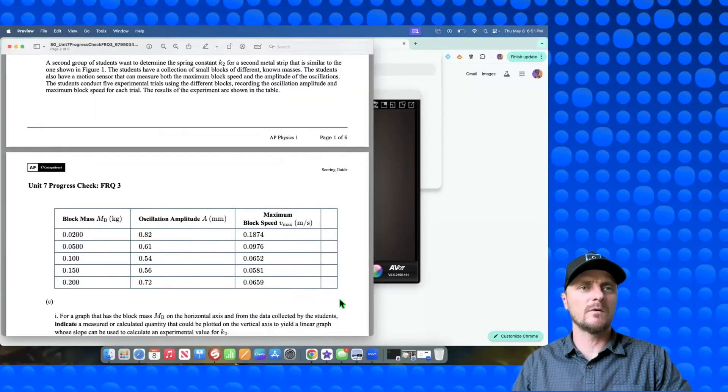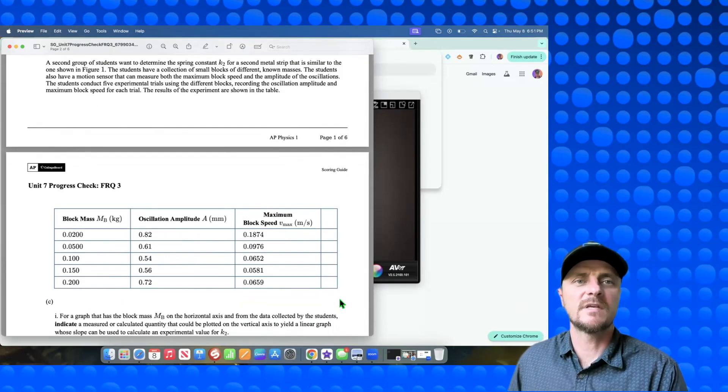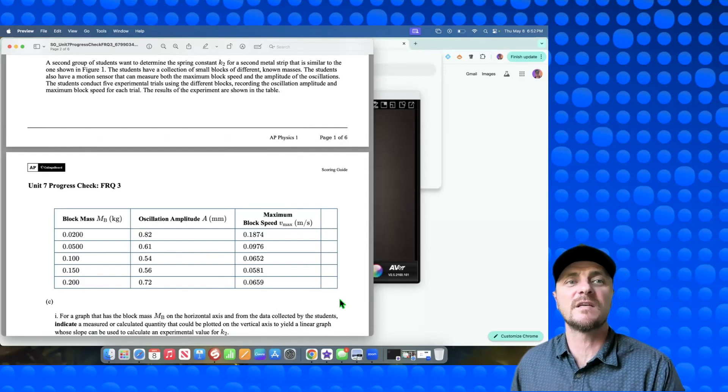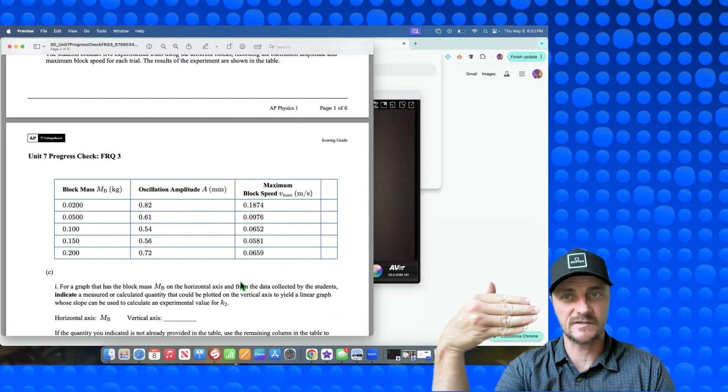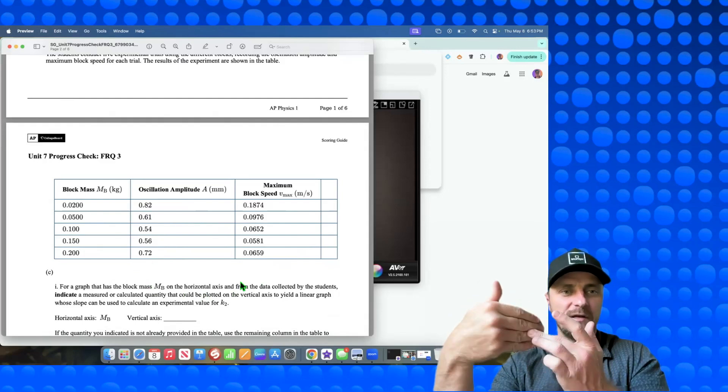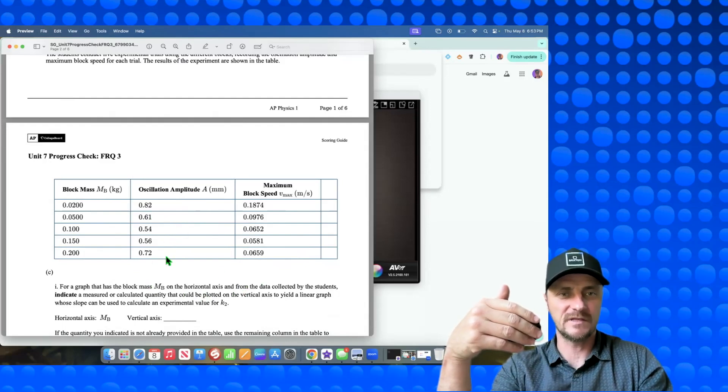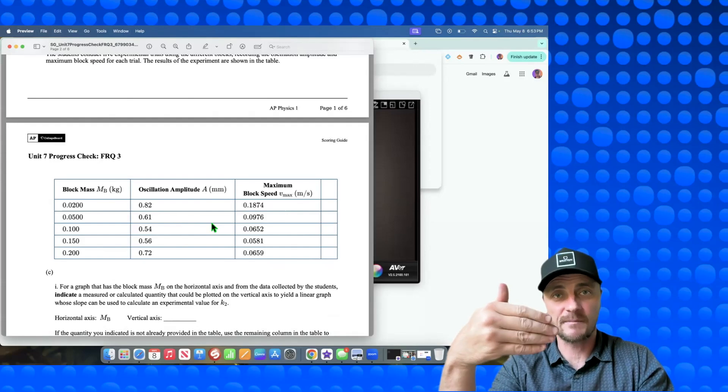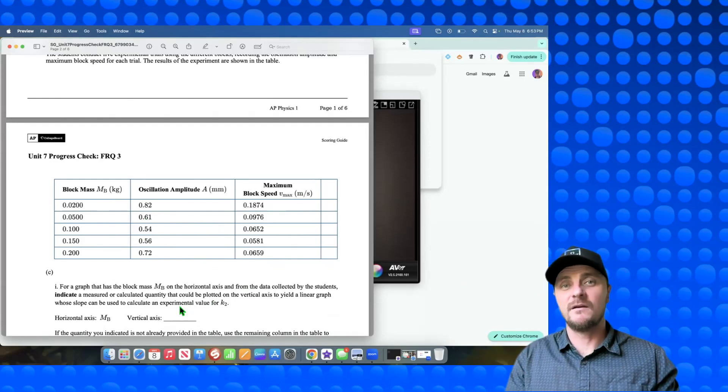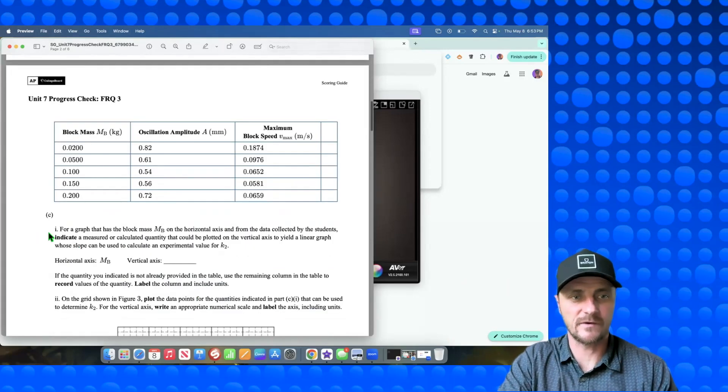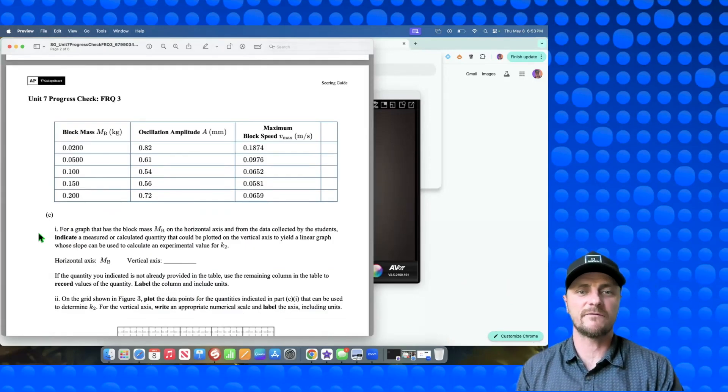Let's go to part C. A second group of students want to determine the spring constant K2 for a second metal strip that is similar to the one shown in figure 1. The students have a collection of small blocks of different known masses. The students also have a motion sensor that can measure both the maximum block speed and the amplitude of oscillations. The students conduct five experimental trials using the different blocks recording the oscillation amplitude and maximum block speed for each trial. The results of the experiment are shown in the table. And this is the same type of system. We have a strip that's going back and forth. Different mass blocks are put on here, and that's creating a different amplitude of oscillation, and also a different maximum block speed.